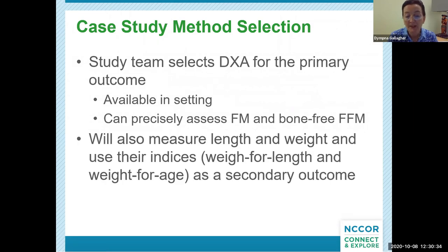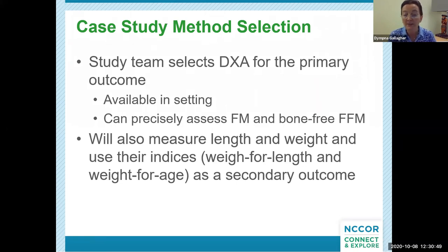Ultimately, the study team decides to use DEXA for the primary outcome, as it is available in the setting and can more precisely assess fat mass and bone-free lean mass. The study will also measure length and weight, using weight-for-length and weight-for-age as secondary outcomes, as these measures are commonly used in clinical practice to assess growth and in other studies for comparison.